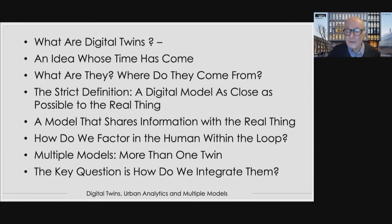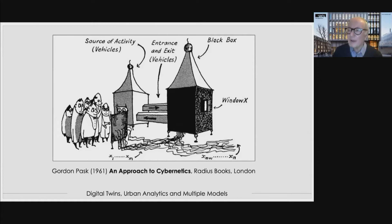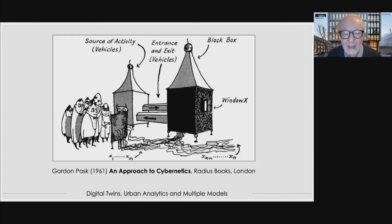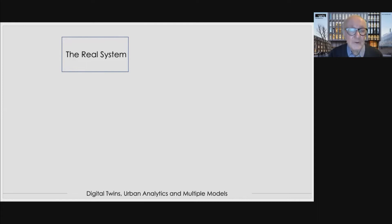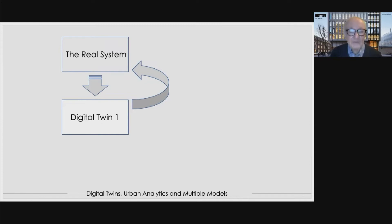Let me show you a cartoon from Gordon Pask — a cybernetics figure from the 1950s and 60s who wrote a book on cybernetics. This is his model of the digital twin. We have the human in the loop watching the digital twin, which is wired up to the real system — he calls the real system a 'black box,' basically a traffic system. We can extract from this the real system and the digital twin, which involves sensing what's going on and modeling it, plus the process of tuning the digital twin to the real system — extracting data and validating it at different points in time and different places — with ourselves in the loop influencing the whole modeling process.